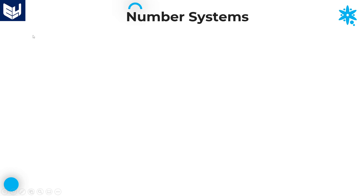Let me explain one more example. For the second example, I will take a perfect square number. I will take 676. 676 is a perfect square number. Even though if you are unable to identify whether it is a perfect square or not, you can directly calculate the number of factors first. Once you are getting an odd number of factors, definitely that is a perfect square number.